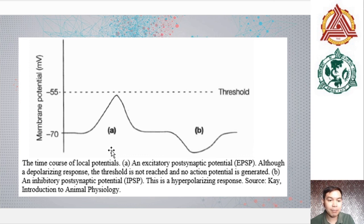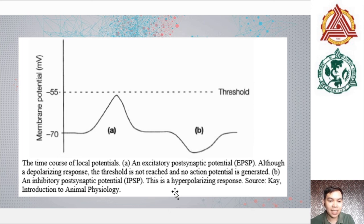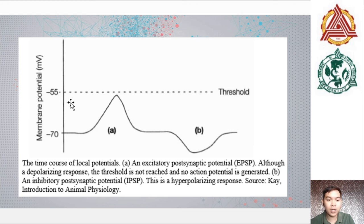The type of channels opened as a result of the neurotransmitter combining with its receptor will determine whether the post-synaptic cell is excited or inhibited. Excitatory post-synaptic potentials or EPSPs are those which depolarize the membrane. As shown in the figure, EPSP produces a depolarizing response; however, if the threshold of negative 55 millivolts is not reached, no action potential is generated. Inhibitory post-synaptic potentials or IPSPs produce a hyperpolarizing response.